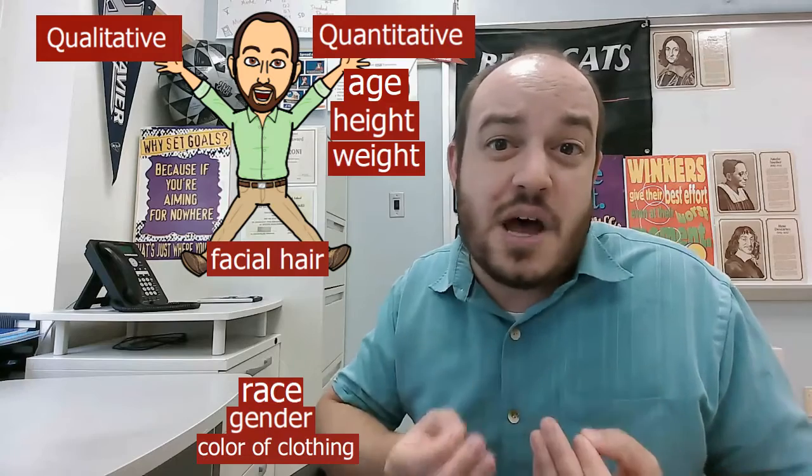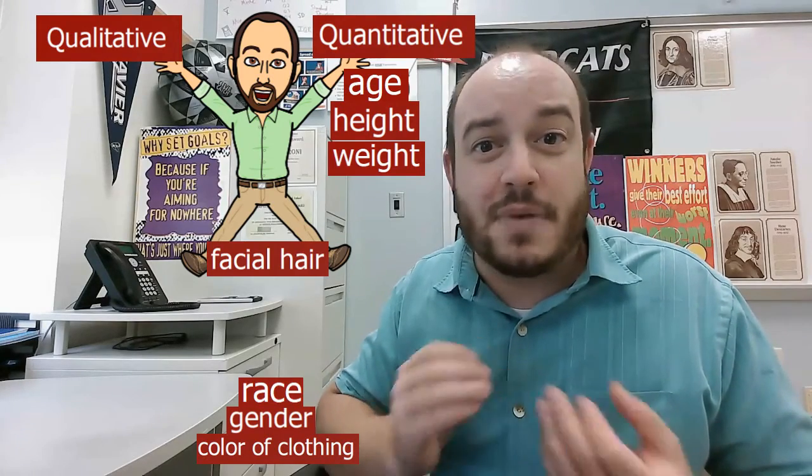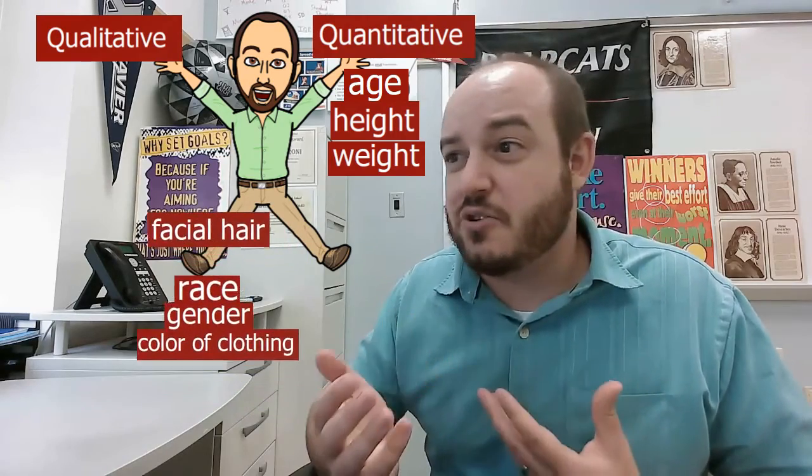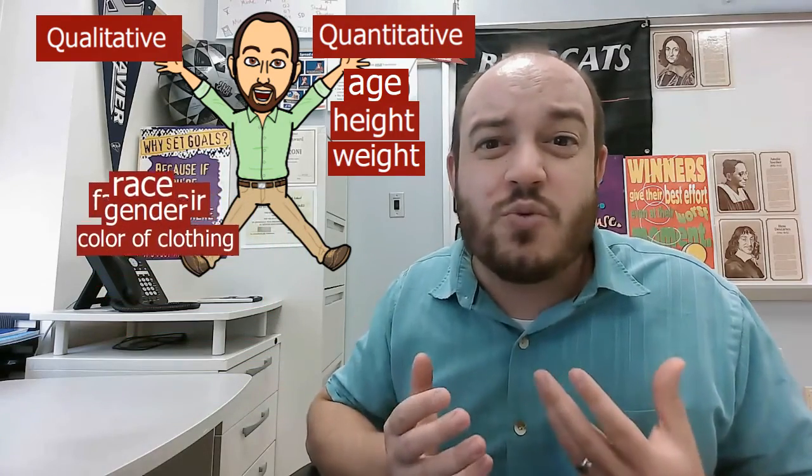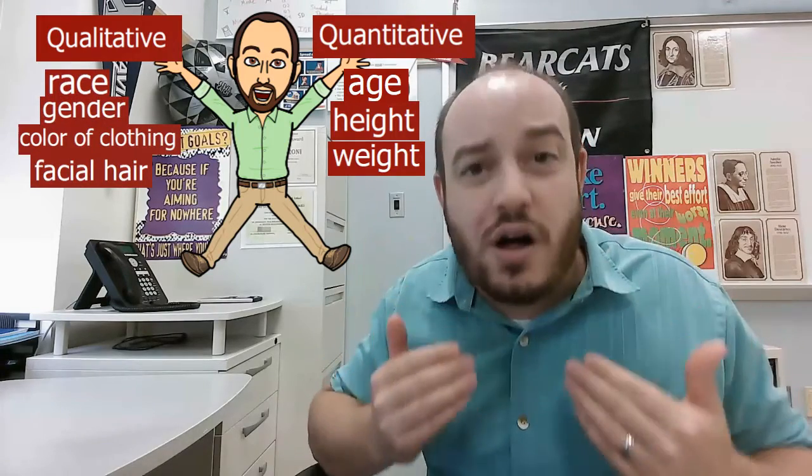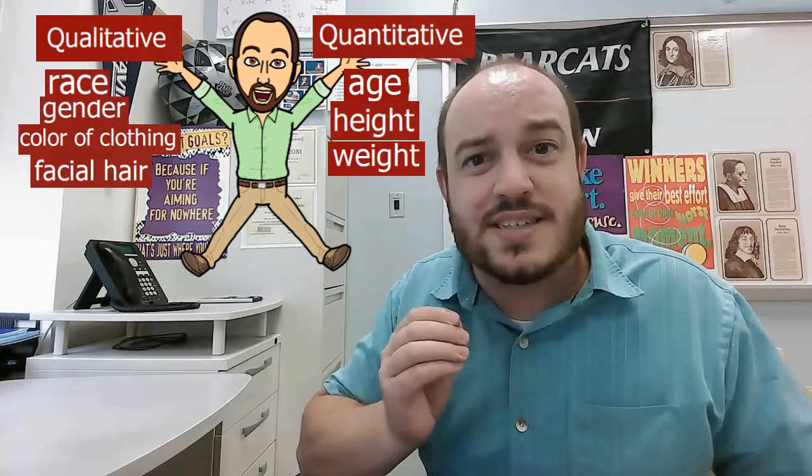Weight, which is measuring how heavy he is, or height, how tall he is. These all are a specific number that's able to tell us how much. Whereas the other ones, race, gender, color of clothing, facial hair, they don't really measure anything, so those will fall in the qualitative category. Those are the ones that are really just labels or descriptions of this guy.